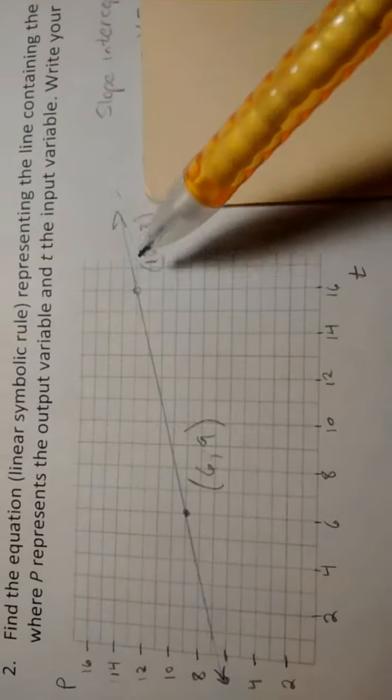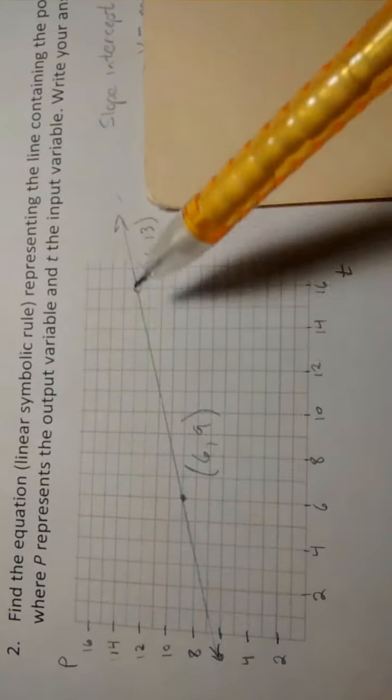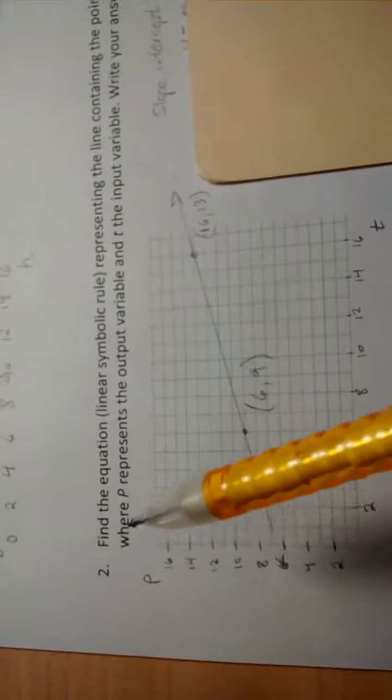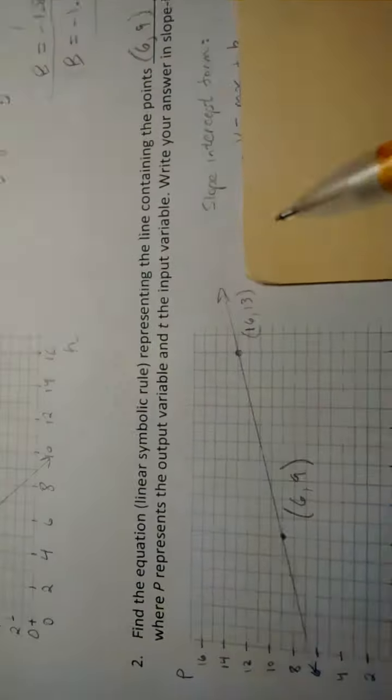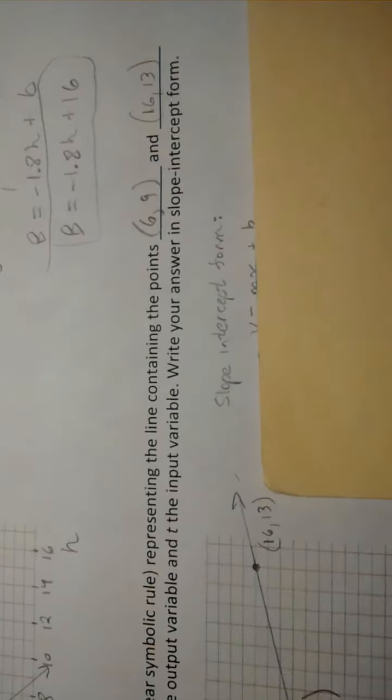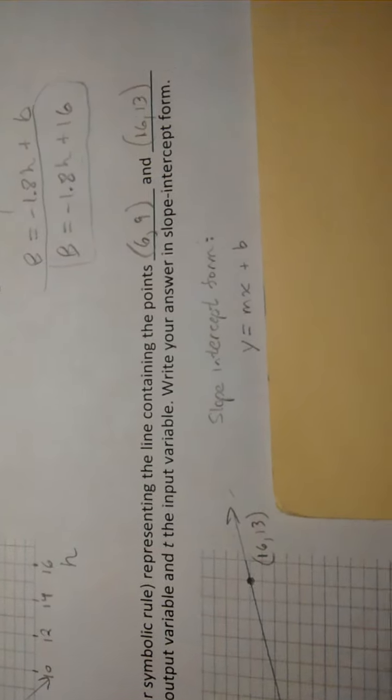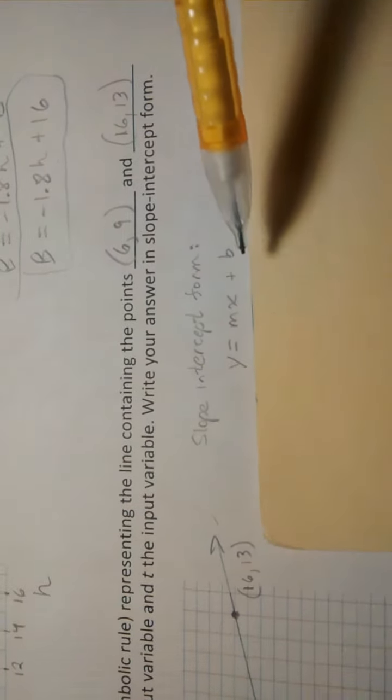What we're after here is the linear symbolic rule that represents this line right here, with the variables P and T representing the output and input respectively. And so here's the technique. To write it in slope-intercept form, you first got to start with the slope-intercept form and understand that any linear function can be written in this format.